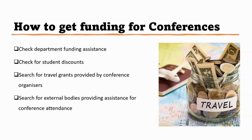First consult your department, and also check for student discounts. Many conferences offer free registration for graduate students, or half price, or a 10–50% discount depending on the conference. Also look for grants provided by the conference organizers themselves. A conference might give travel grants, hotel grants, or registration fee waivers to encourage participation from students or those from the Global South. Since you're coming from a developing country or as a graduate student without funds, they may waive fees so you can come for free.